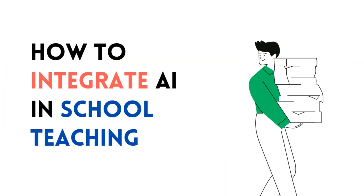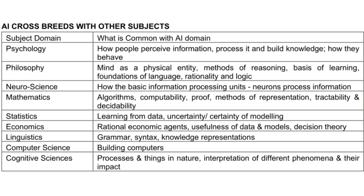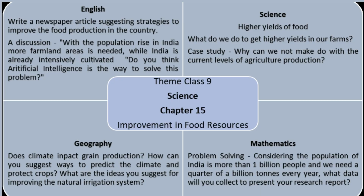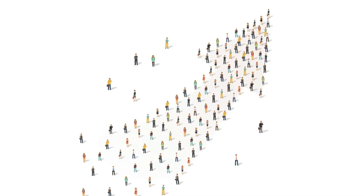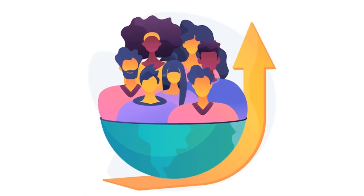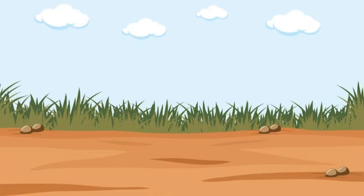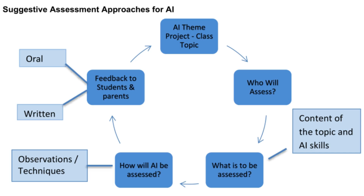Let us see how we can integrate AI with different subjects, with the help of some examples. For the subject English, the teacher can ask students to write a news article suggesting strategies to improve food production in the country. Students can have a discussion — for example, with the population rise in India, more farmland is needed. While India is already intensively cultivated, can artificial intelligence be a way to solve this problem?